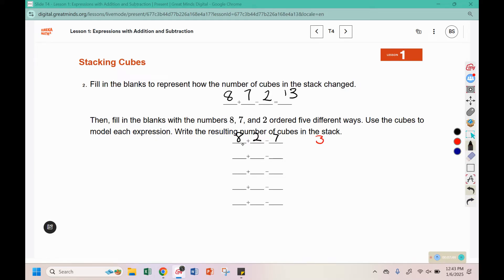What if we started with eight, seven, and two? That gave us thirteen. What if we put the seven in front? We started with seven, we added two. That would give us nine, and we subtracted eight. That gives us one. What if we start with seven and add eight? Seven plus eight is fifteen, and we subtract two. That gives thirteen.